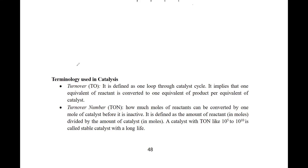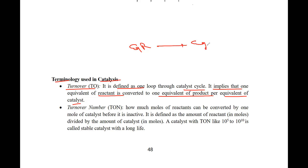In this video we are going to discuss some terminology used in the catalysis process. First is turnover. It is defined as one loop through a catalytic cycle. It implies that one equivalent of reactant is converted to one equivalent of product for one equivalent of catalyst.